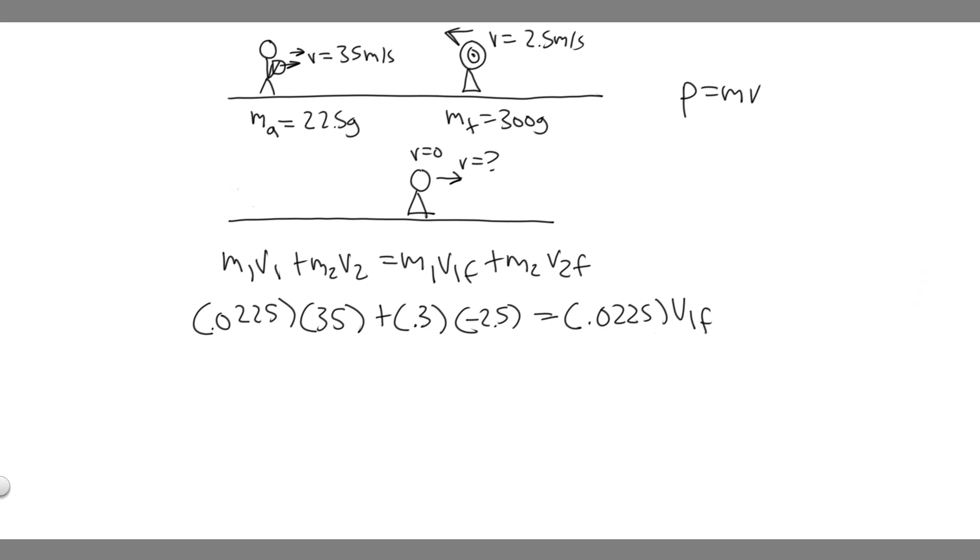If we want to find v1 final we just divide by 0.0225 on both sides. Go ahead and do this: 0.0225 times 35 plus 0.3 times minus 2.5, and then divide by 0.0225, and you'll get v1 final which is 1.6666 and so on, you can round to 1.67.